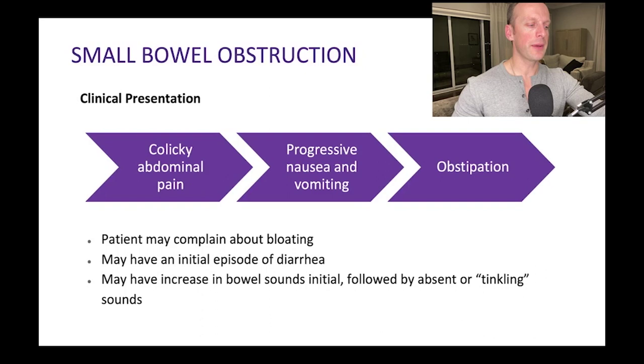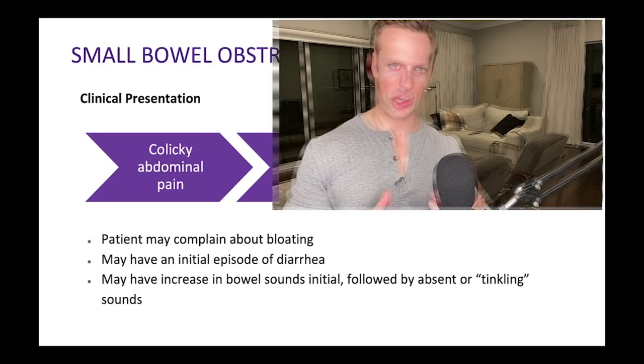For small bowel obstruction, the clinical presentation typically begins with colicky abdominal pain. Colic is this intermittent abdominal discomfort — you have a fixed obstruction and the GI tract proximal to it is trying to push against it, causing abdominal cramping. It squeezes hard against the obstruction, then stops. The classic presentation of colic is this intense, squeezing abdominal pain that then gets momentarily better — an intermittent, intense, short abdominal pain that gets relieved in time.